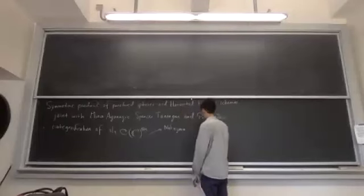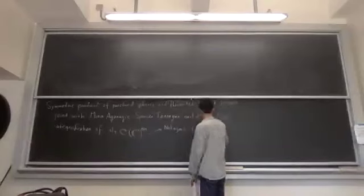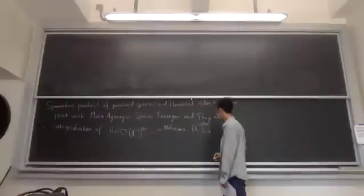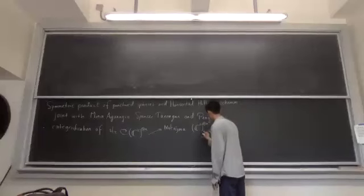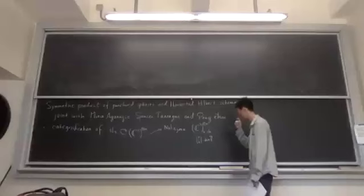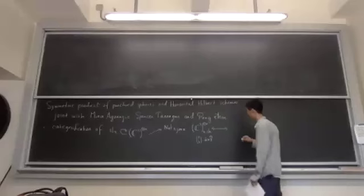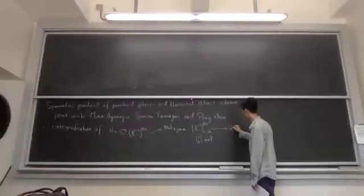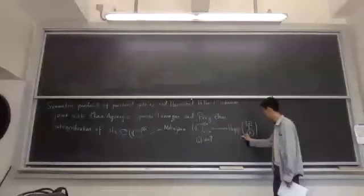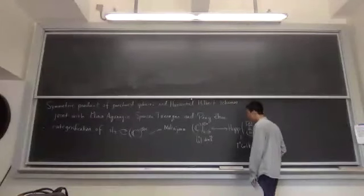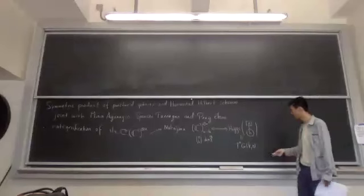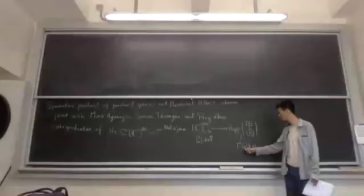What Nakajima said is that the particular weight space of lowering the highest weight by k times the root — this space is n choose k-dimensional, complex n choose k-dimensional — is related to the geometry of the Higgs branch of this quiver. This is nothing but T star Grassmannian(k,n). The lowering and raising operators between weight spaces are described by Lagrangian holomorphic Lagrangian correspondences between the various Grassmannians.